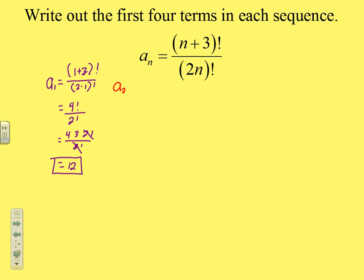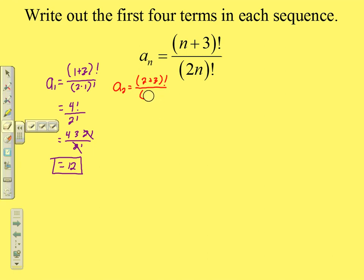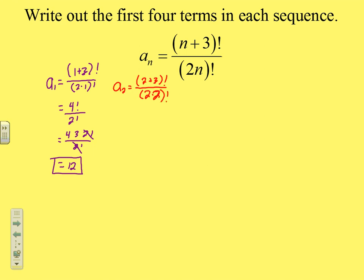For the second term, substitute n equals 2: (2 plus 3) factorial over 2 times 2 factorial gives 5 factorial over 4 factorial. That's 5 times 4 factorial over 4 factorial — the 4 factorials cancel — leaving 5 as the second term.